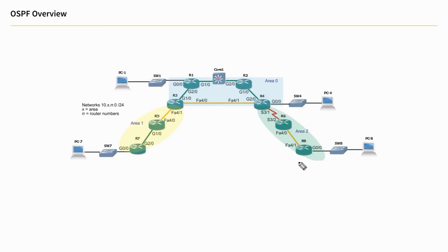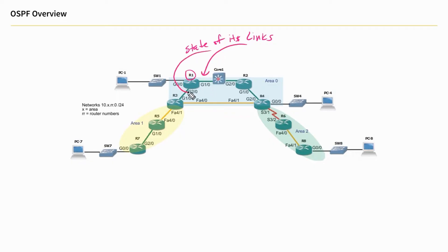In this overview, let's talk about how OSPF does its work. Let's imagine we've got R1 right here, and R1 has information about its directly connected networks — or another way of thinking about that is the state of its links: gig one zero, gig two zero, and gig zero zero. At the heart of OSPF is something called an LSA — a link state advertisement. One of those types of link state advertisements is created by each router regarding itself. R1 would have a link state advertisement that talks all about it.